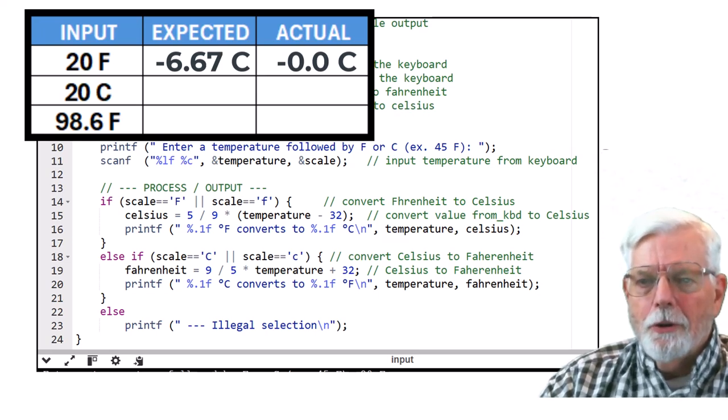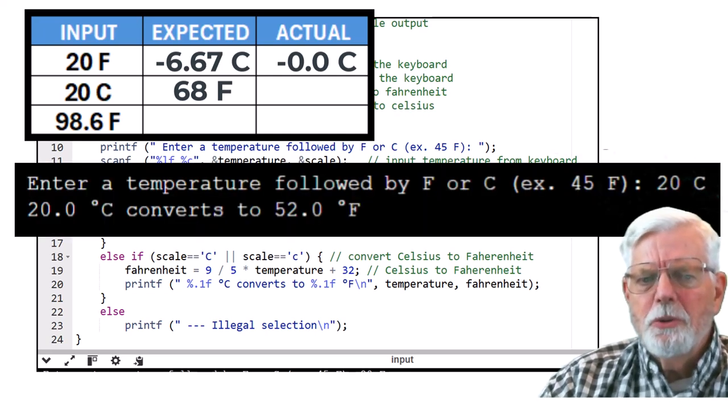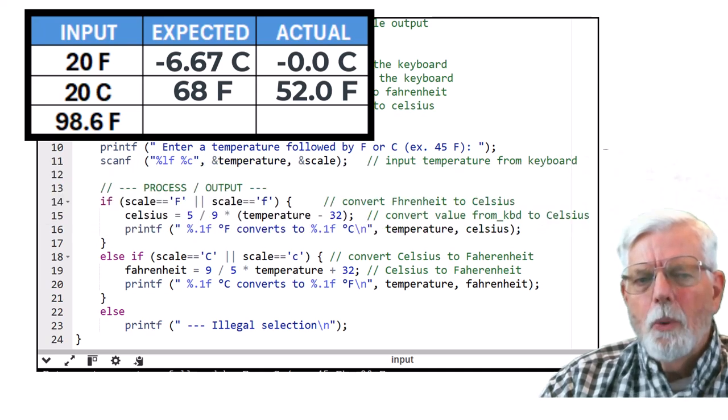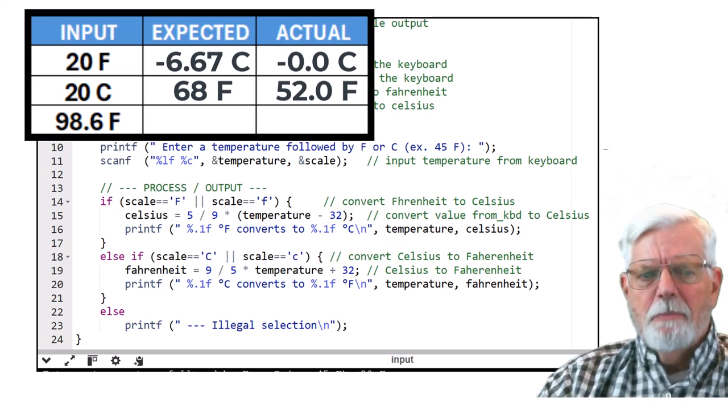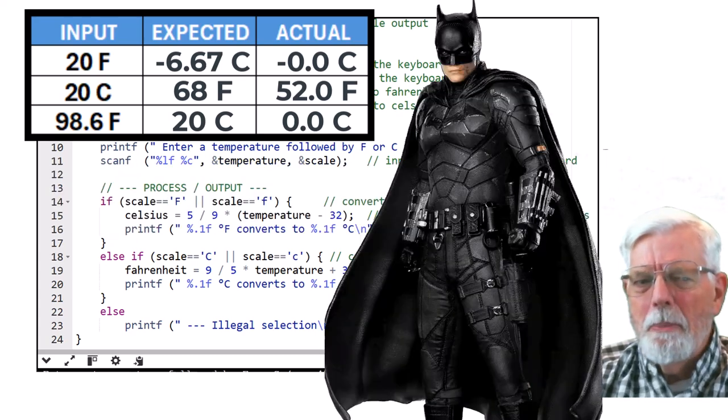Maybe the next computation will be better. Let's try converting 20 degrees C into Fahrenheit. The program says 20 degrees C converts to 52 degrees Fahrenheit. Expected value is 68 degrees Fahrenheit. How about one more conversion? Third time's the charm. Maybe that will be correct this time. 98.6 degrees F should convert to 37 degrees C, but it shows as 0.0 degrees C. Something just ain't right here, Batman.